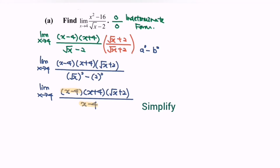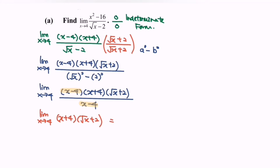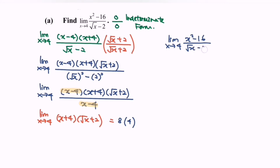After simplification, the limit when x approaching 4 becomes (x plus 4) multiplied with (square root of x plus 2). Now substitute the value 4: we have 8 multiplied with square root of 4, which gives 2, then 2 plus 2 gives 4. So 8 × 4 = 32. Therefore, the limit when x approaching 4 for (x² minus 16) over (square root of x minus 2) equals 32.